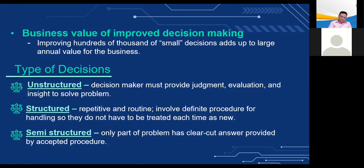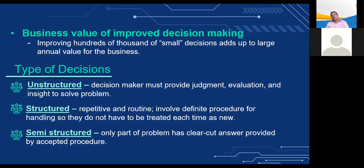Business value of improved decision making: improving hundreds of thousands of small decisions adds up to large annual value for the business. Types of decisions: first, unstructured decisions — the decision maker must provide judgment, evaluation, and insight to solve the problem. Each of these decisions is novel, important, and non-routine with no well-understood or agreed-on procedure. Second, structured decisions are repetitive and routine and involve a definite procedure. Third, semi-structured decisions have only part of the problem with a clear-cut answer. Structured decisions are more prevalent at lower organizational levels, whereas unstructured problems are more common at higher levels.